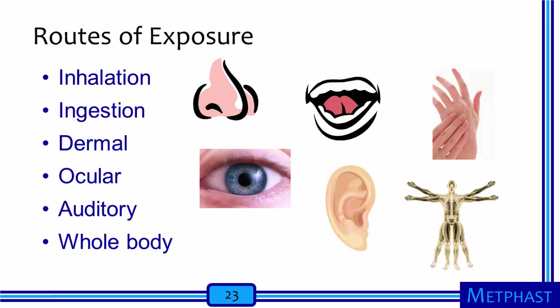There are a variety of routes of exposure. The three most common ones we consider are inhalation (breathing in), ingestion (swallowing water or food), and dermal exposures. However, there can also be exposures through the eye (referred to as ocular exposures), auditory exposures through the ear, and whole body exposures to hazards like vibration or radiation.